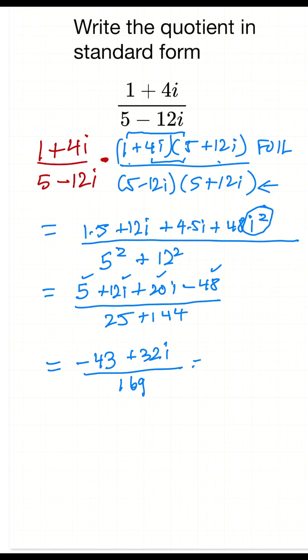So we can write this in standard form. That's minus 43 divided by 169 plus 32 divided by 169 times i. So there's our answer to the quotient of that complex number in standard form.